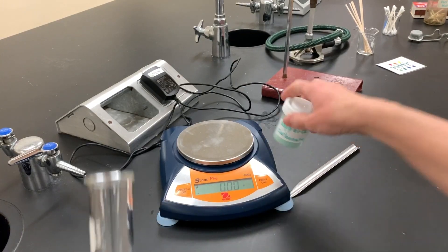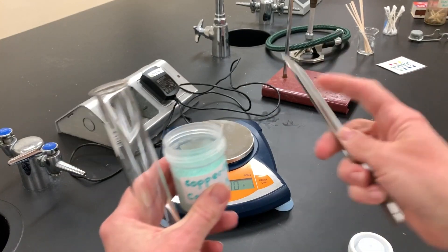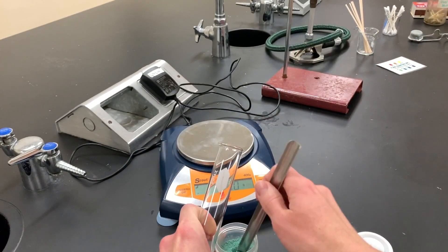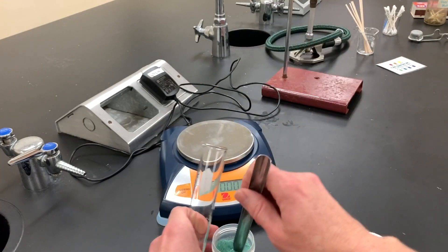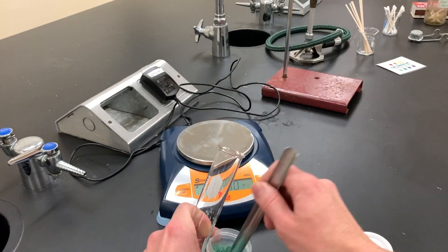Step number two: grab your copper two carbonate, very carefully open it and try not to spill any. Using a scoopula, add in what your teacher directs. These test tubes are a little bit large, so I'm going to put about three scoops full in there.